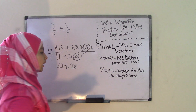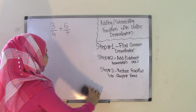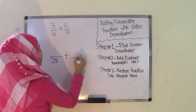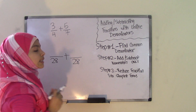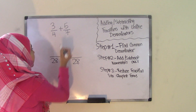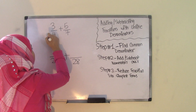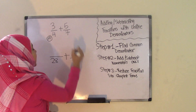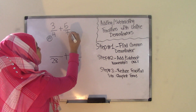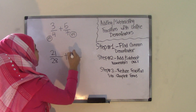Remember, your LCM is your common denominator. So now we have to rewrite the fractions with a denominator of 28. Now, what you need to do is perform the same operation you did to the denominator also on the numerator. We need to find what times 4 gave us 28 and what times 7 gave us 28. By dividing: 28 divided by 4 is 7, and 28 divided by 7 is 4. So 3 times 7 is 21, and 5 times 4 is 20.